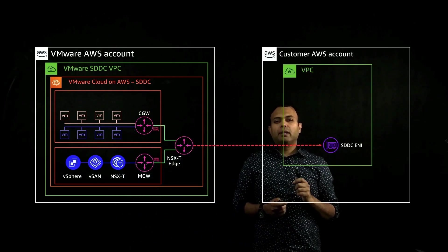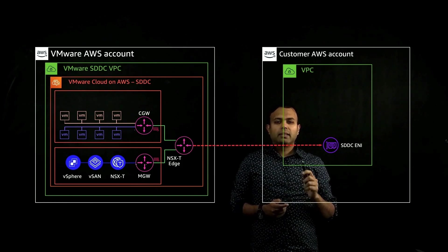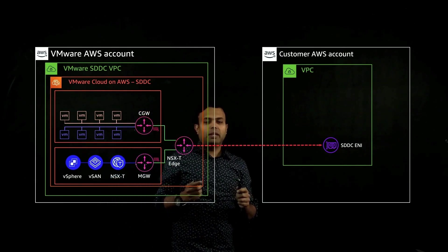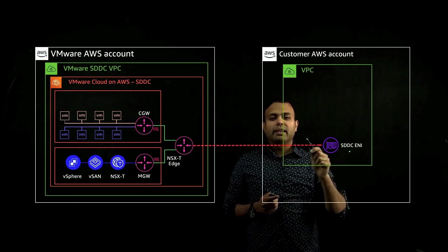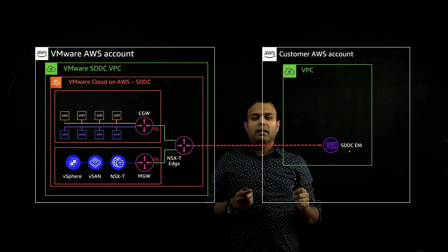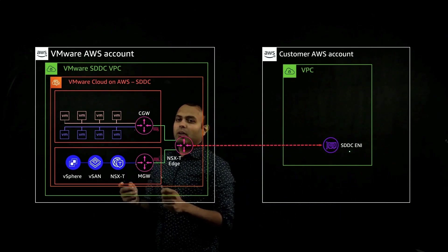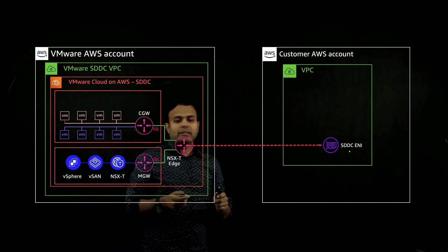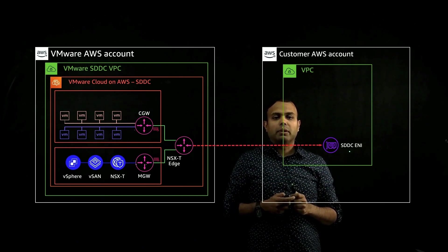On the other hand, you have the customer AWS account, which is completely owned and managed by the customer. One of these VPCs in the account is designated as the connected VPC. When you deploy VMware Cloud on AWS SDDC, what it essentially does is it creates a few elastic network interfaces, also called as ENIs, in the designated connected VPC. One of these many ENIs is going to be designated as the active ENI that helps facilitate all of the traffic communication between the AWS environment and the VMware Cloud on AWS environment. This enables the workloads sitting inside the SDDC to establish communication with the connected VPC and all of the native AWS services that reside in the customer AWS account.